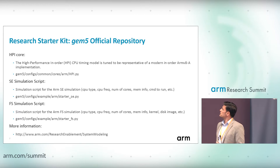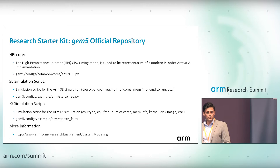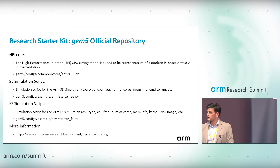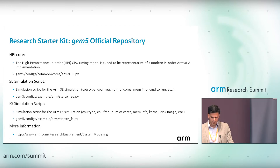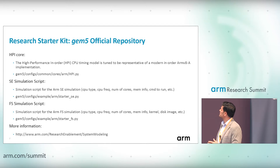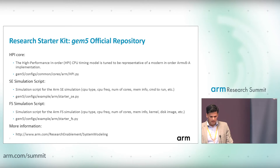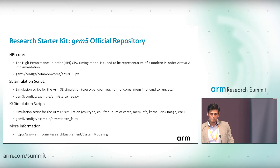You can change the CPU frequency, number of cores, memory information, and the command to run in SE mode. This is available under the example ARM directory. The FS simulation script is similar but for FS mode — there are extra parameters such as kernel, disk image, etc., which you can also set. More information can be found on our website.